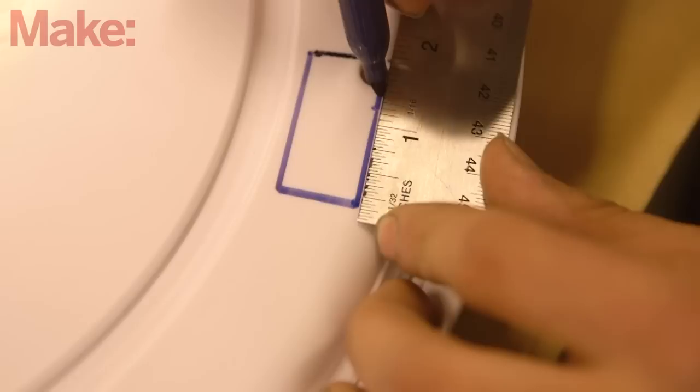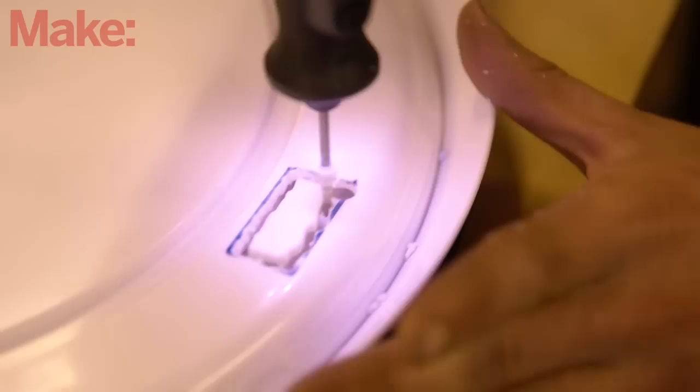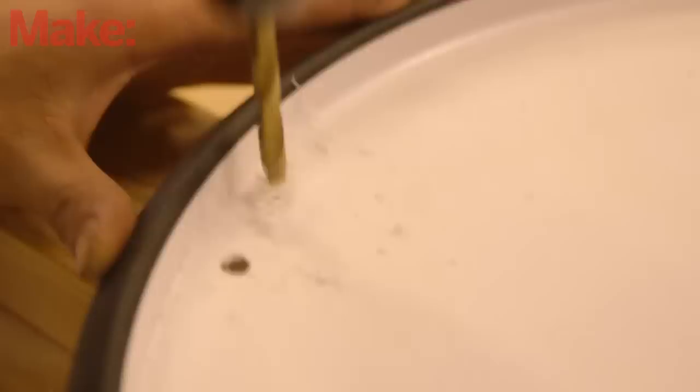We'll start by modifying the lazy Susan. Flip it over and choose any of the four holes near the periphery. Using the hole as a starting point, cut a three quarter inch by one and a half inch rectangular opening with a Dremel or similar tool. Be sure to only cut through the base of the turntable, not the turntable itself.